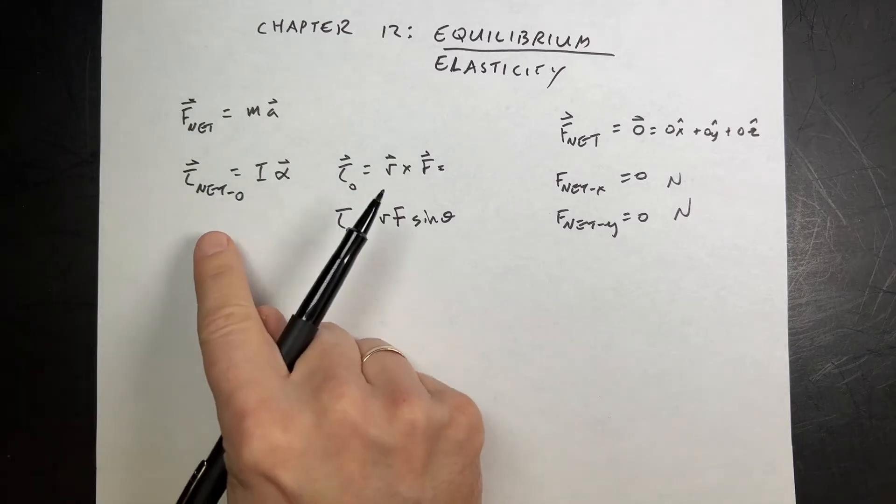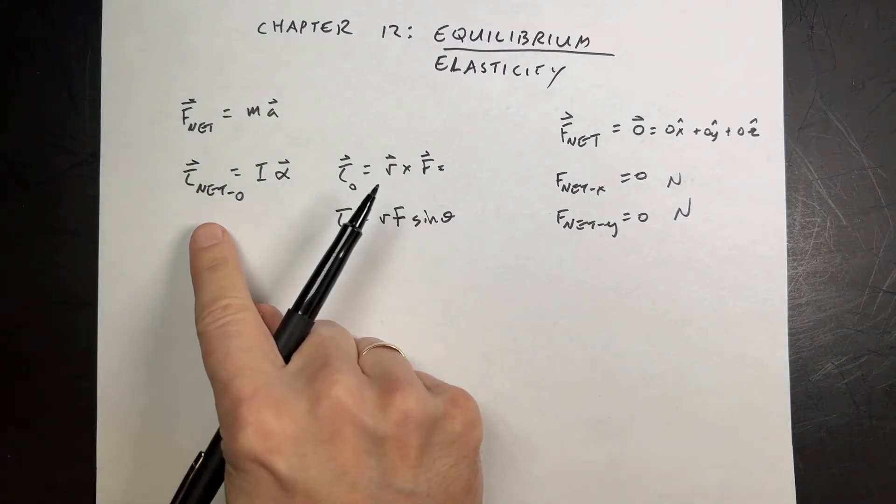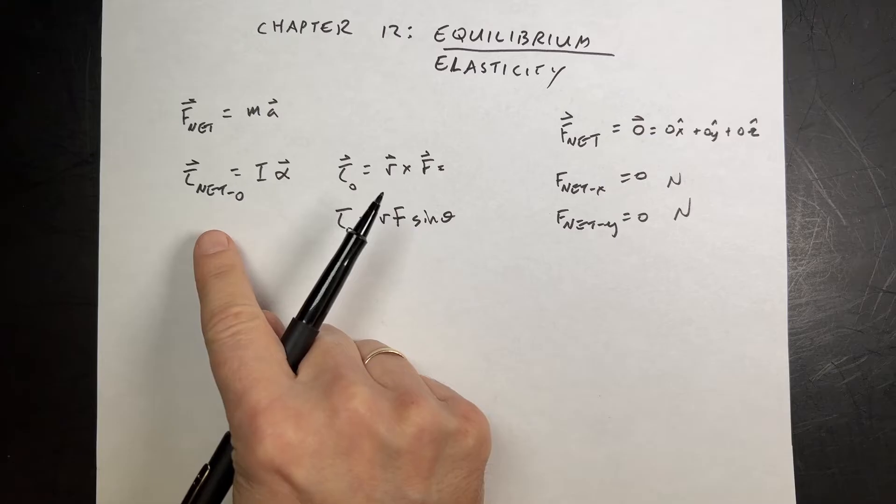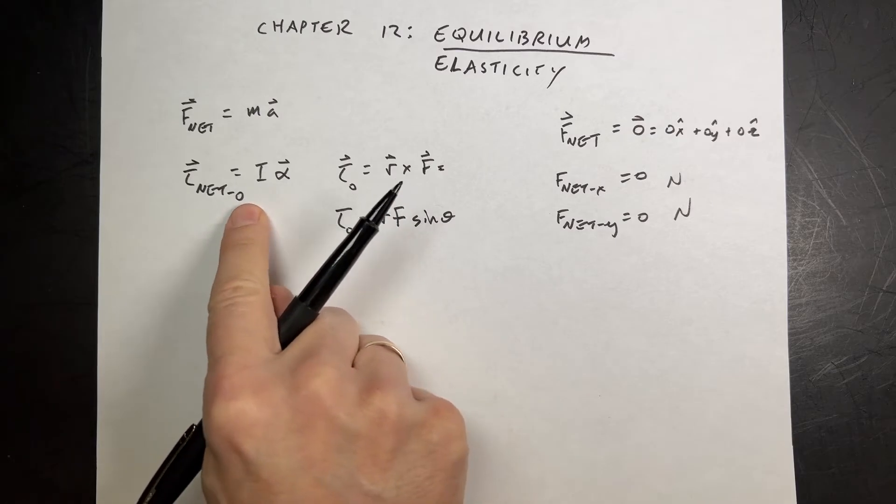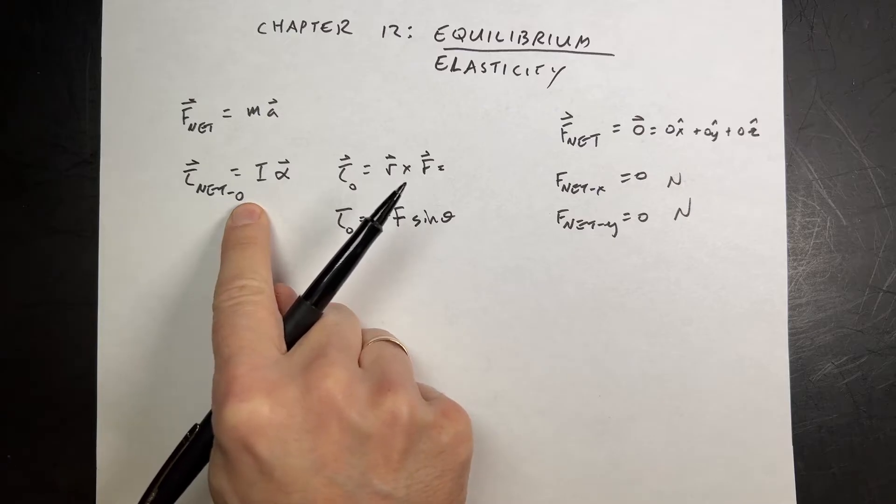Now, we have the same thing for torque. If it's really an equilibrium and doesn't change its rotational motion, then the total torque about some point O, you have to pick the point, right?